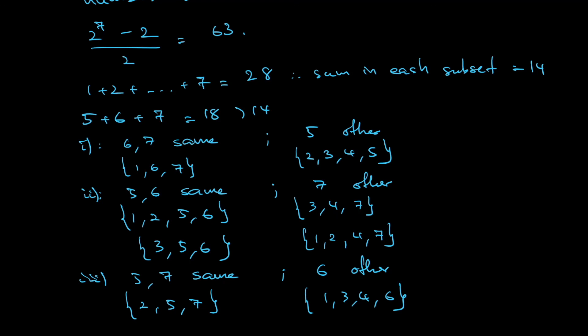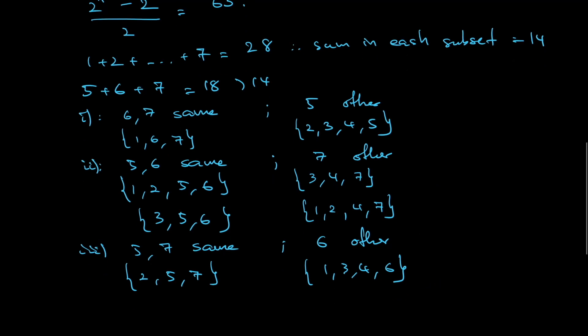So how many kinds of arrangements do I have in total? 1, 2, 3, 4 — four arrangements. Hence, my probability P will be 4 divided by 63. The probability P equals 4/63.